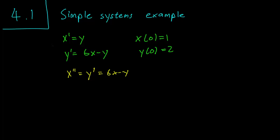And now, we can write x prime equals 6x minus y, but by the first equation again, this is just going to be equal to 6x minus x prime. So let's write down our second order linear equation.